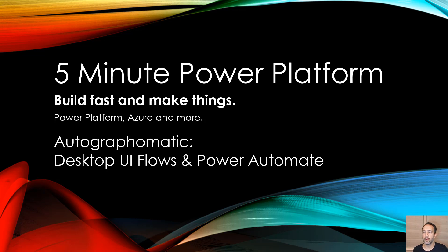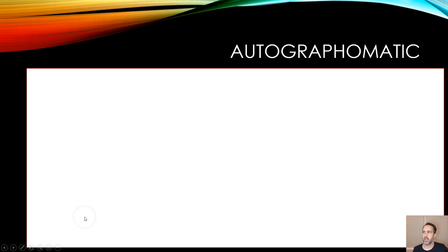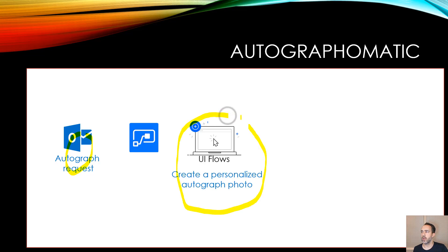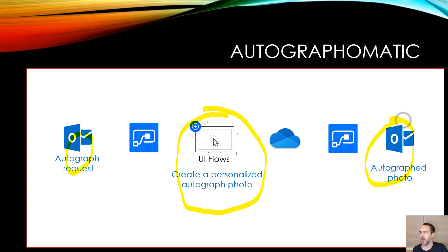This is 5-Minute Power Platform and today we're doing a project called Autograph-O-Matic. The idea is that we're going to set up a system so that someone could email an autograph request in, then Flow will take that in and run a desktop UI flow that will create a PNG file — a personalized autograph — dropped in OneDrive, and then Flow will send that back out to the requester.